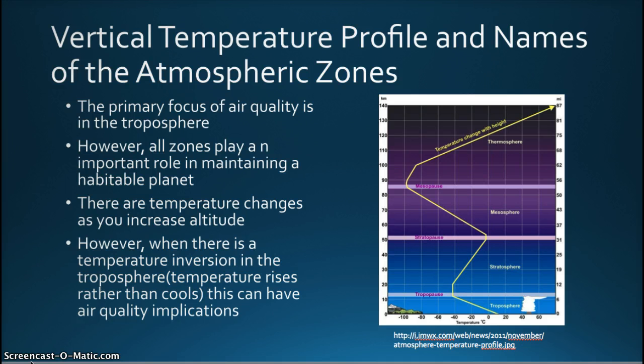Between each layer is a pause, or a boundary, between the gradients where the temperature is stable. However, above the pauses, the temperature changes fairly rapidly.